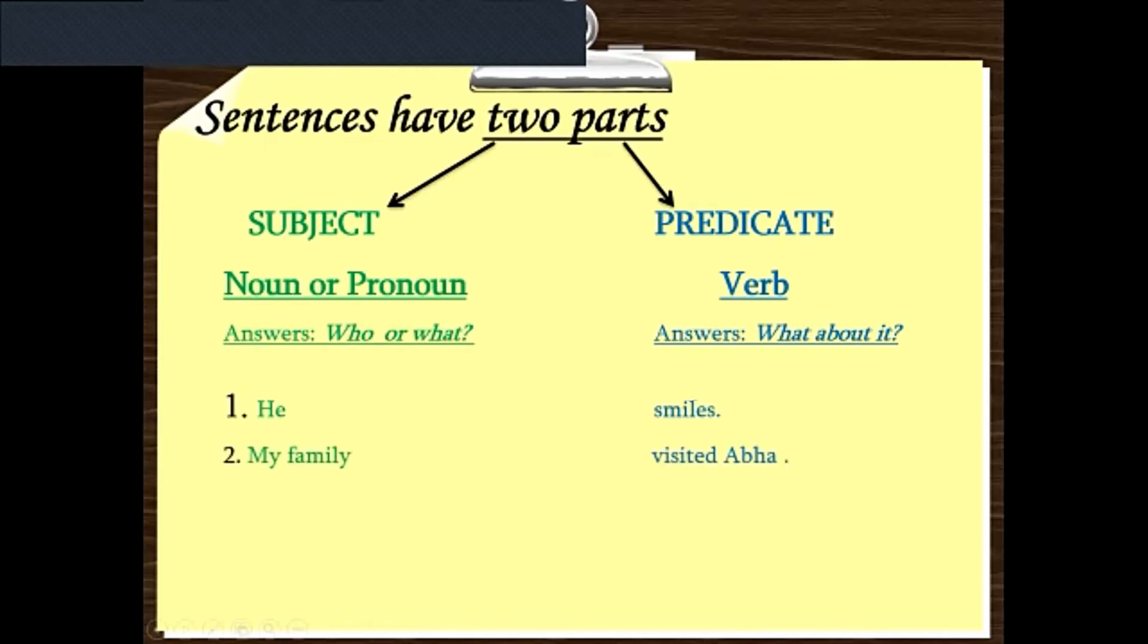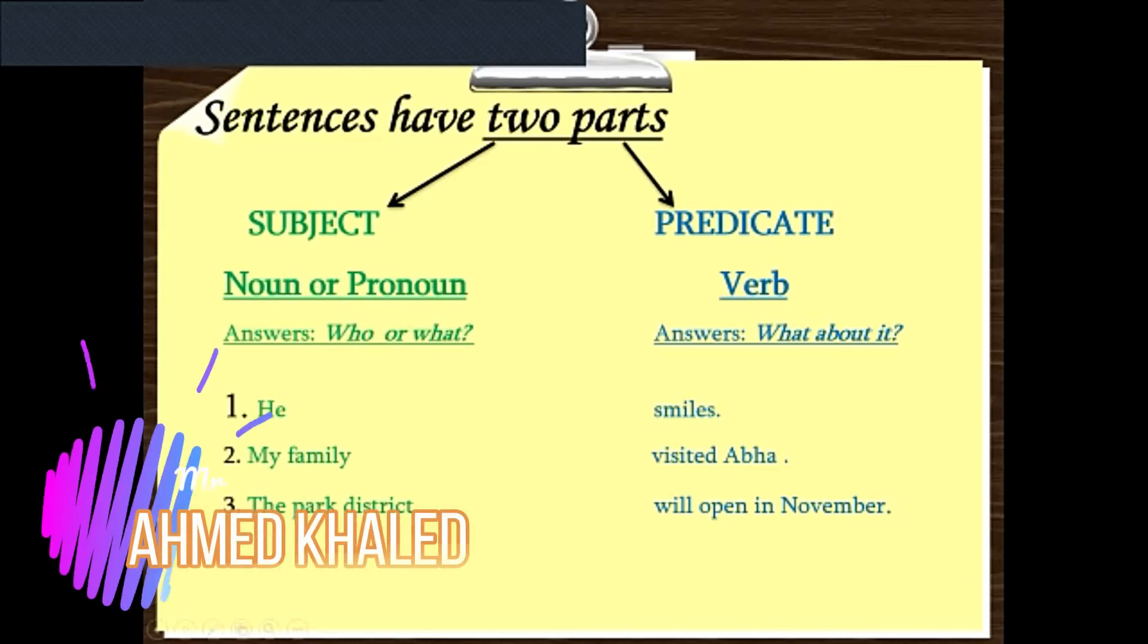Also, we have 'My family,' so this is the subject. 'Visited Abha' is the predicate. Number three: 'The park district will open in November,' so the park district is the subject, and 'will open in November' is the predicate. Here it shows you that the subject can be one word or a group of words. The same for the predicate. It can be just the verb, or the verb and an object, or the sentence may have a completion.